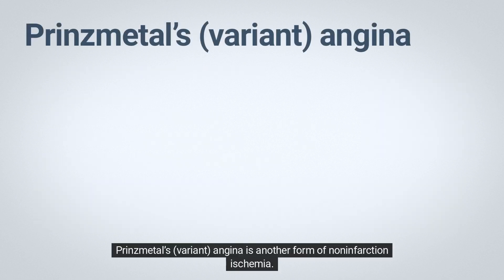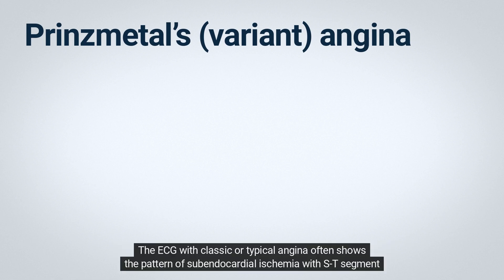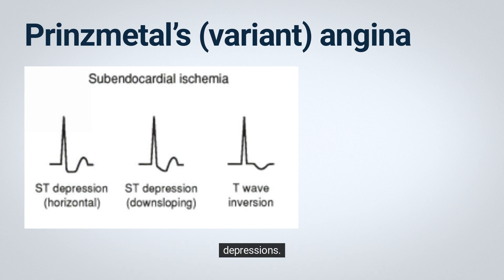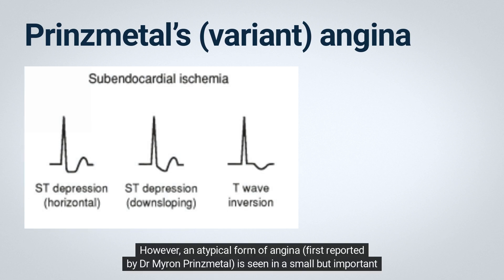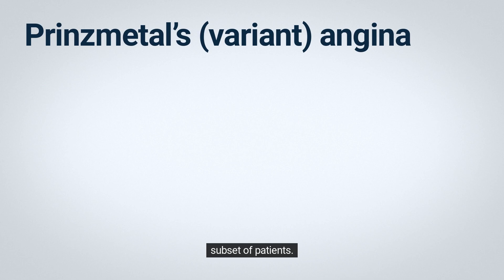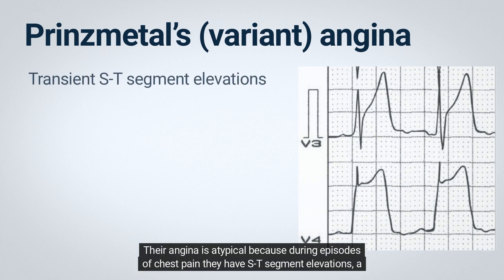Prinzmetal's variant angina is another form of non-infarction ischemia. The ECG with classic or typical angina often shows the pattern of subendocardial ischemia with ST segment depressions. However, an atypical form of angina first reported by Dr. Myron Prinzmetal is seen in a small but important subset of patients whose angina is atypical because during episodes of chest pain they have ST segment elevations.